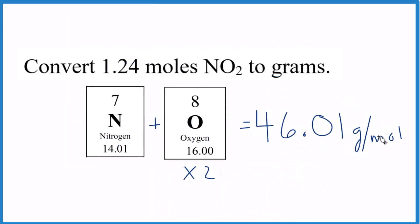Let's try one. So here we have 1.24 moles of NO2. We want grams. Remember, moles to grams, we multiply by the molar mass. So I've given you the molar mass here for NO2.